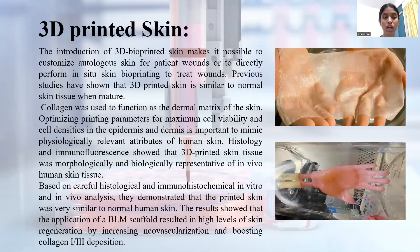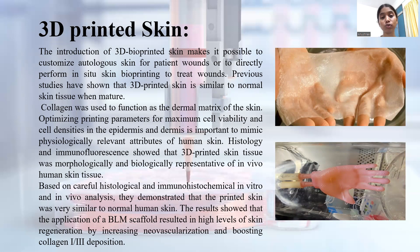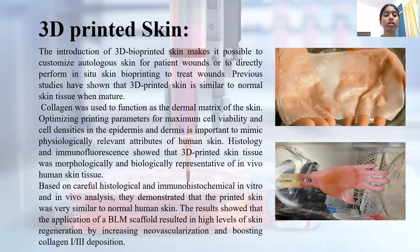The introduction of 3D printed skin makes it possible to customize autologous skin for a patient's wound or to directly perform in-situ skin bioprinting to treat wounds. Here in the diagram you can see the 3D bioprinted skin, which is so similar to human skin that we cannot even identify which is the artificial one and which is the real one. Previous studies have shown that 3D printed skin is similar to normal skin tissue when matured. Collagen, the main functional unit of skin, was used to function as the dermal matrix. Optimizing printing parameters for maximum cell viability and cell densities in the epidermis and dermis is important to mimic physiologically relevant attributes of human skin.